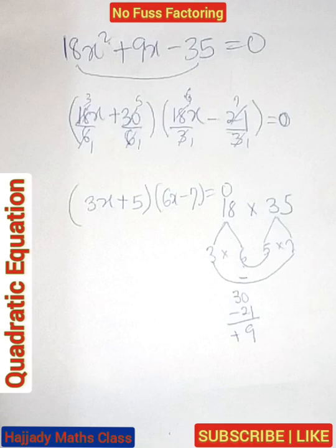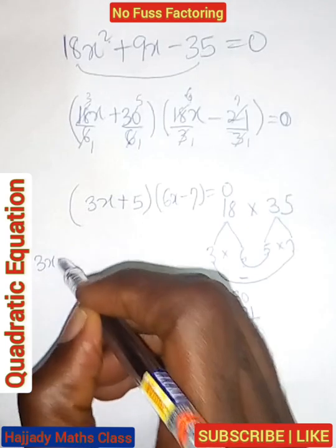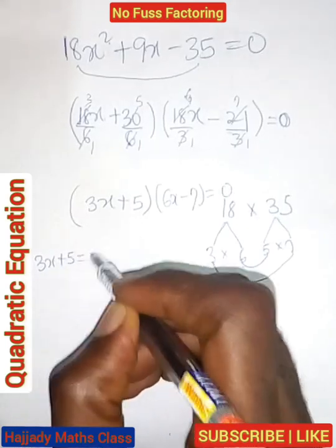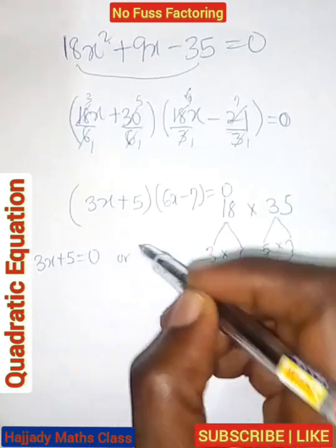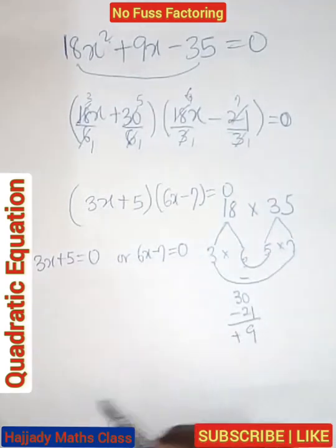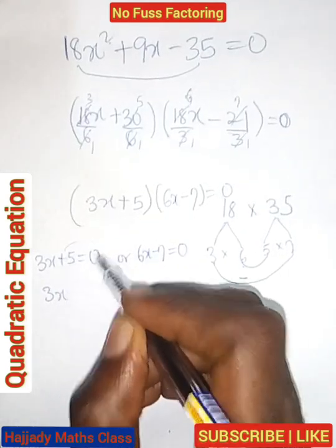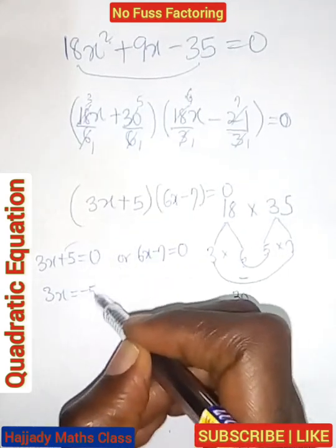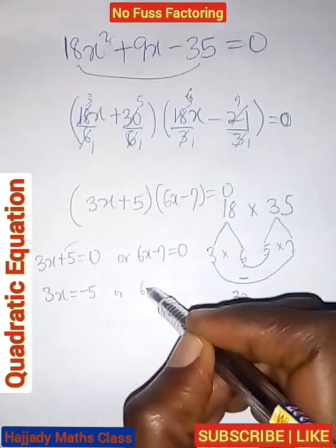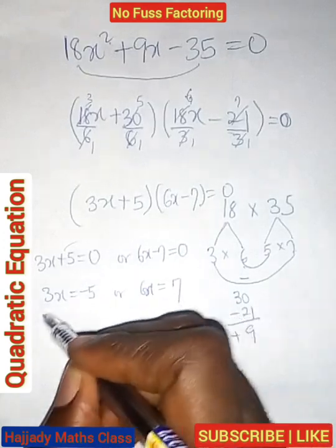Simplifying this further, we have that we can possibly equate each of it, which is 3x plus 5 equals 0 or 6x minus 7 equals 0. Simplifying this further, we have that 3x, if this comes here, equals minus 5 or 6x equals 7.